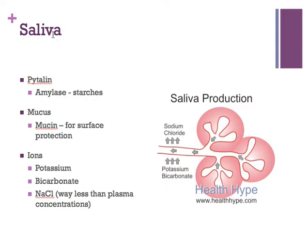Looking at saliva, there are a bunch of different things associated with this nice, stable, basic pH product with high mucus content and high water content. The term 'tylins' refers to a variety of digestive enzymes; the salivary enzyme specifically is amylase. Salivary amylase breaks down carbohydrates or starches — anything sugar-related. Since we run on glucose, as soon as starches are broken down, they can be utilized right away if they're in the mouth.